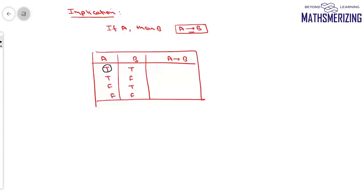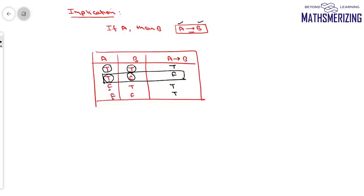For A→B: if A is true and B is true, then A→B is true, since whenever A is true, B must be true. If A is true but B is false, then A→B is false. When A is false, the implication doesn't hold — it only makes sense if A is true — so in both cases where A is false, we take A→B as true. Therefore, the only case where A→B is false is when A is true but B is false.